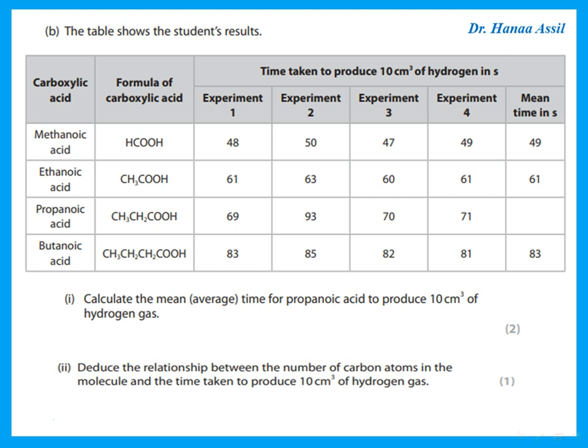To calculate the average time for propanoic acid to produce 10 cm³, the results were 69, 93, 170, and 171 seconds. One result is anomalous — the 93 seconds is very different from the others, which are all near 70. So we ignore the 93 and take the average of the other three experiments, which comes out to be 70 seconds.